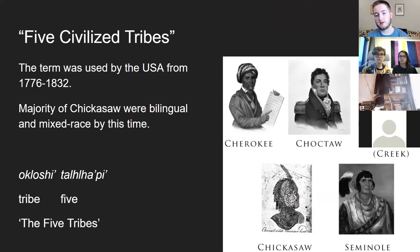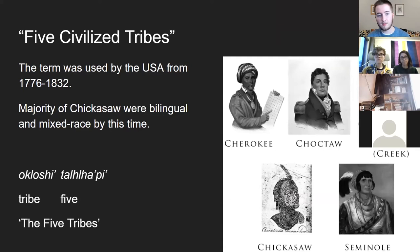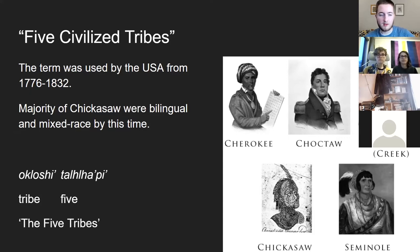The Chickasaw are sometimes called one of the five civilized tribes — a name the United States officially designated in the early colonial period, roughly from 1776 to 1832 — because by the time the US was established, the Chickasaw had already undergone a long period of Europeanization. By 1776 the majority of Chickasaw were bilingual and mixed race already. In Chickasaw, we refer to this group simply as 'the five tribes,' leaving out the word 'civilized' because I think that's a load of mumbo jumbo.